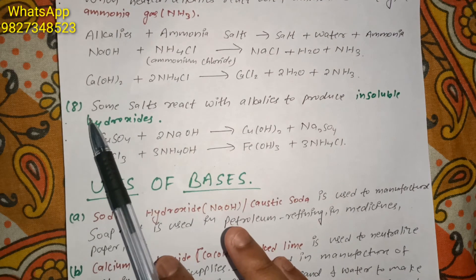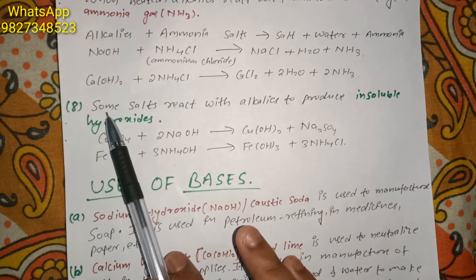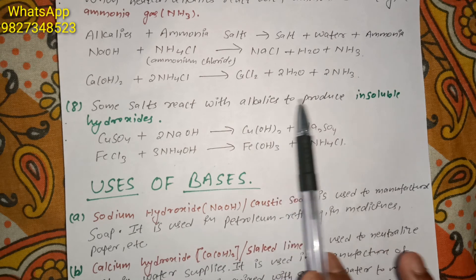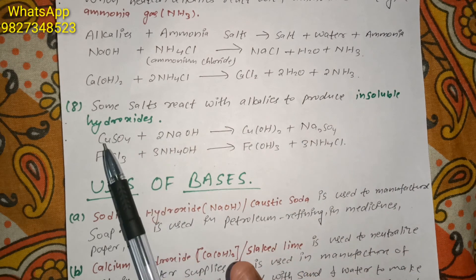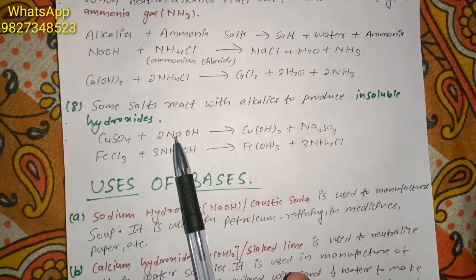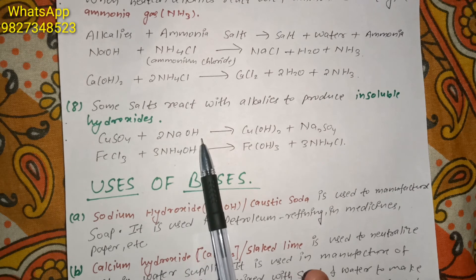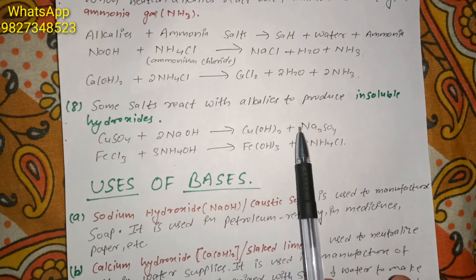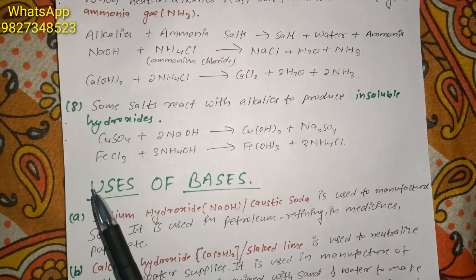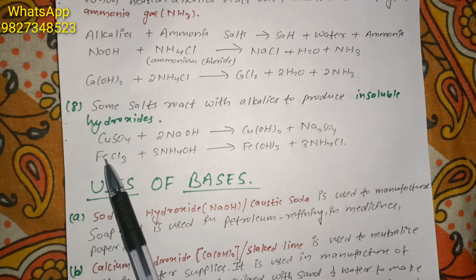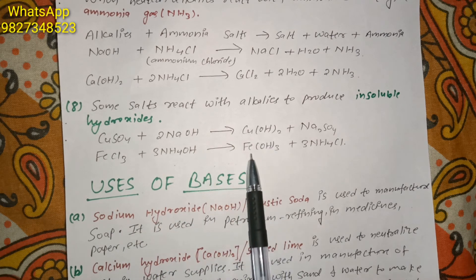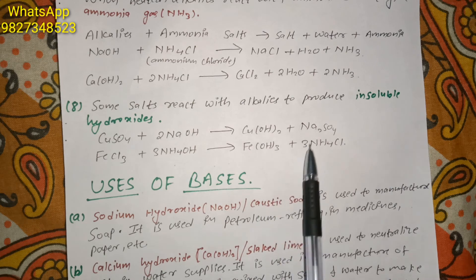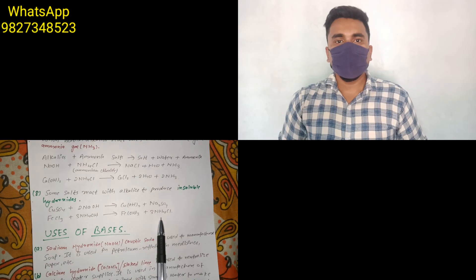The fourth type of reaction is that some salts react with alkalis to produce insoluble hydroxides. For example, when copper sulfate reacts with sodium hydroxide, it gives copper hydroxide and sodium sulfate. Similarly, when ferric chloride reacts with ammonium hydroxide, it gives ferric hydroxide and ammonium chloride.